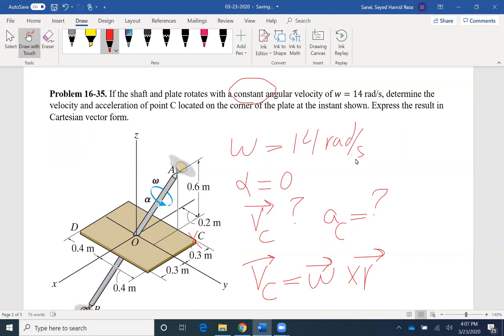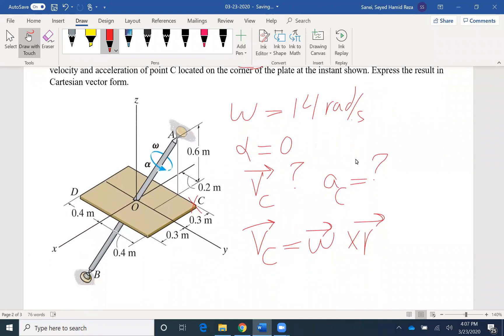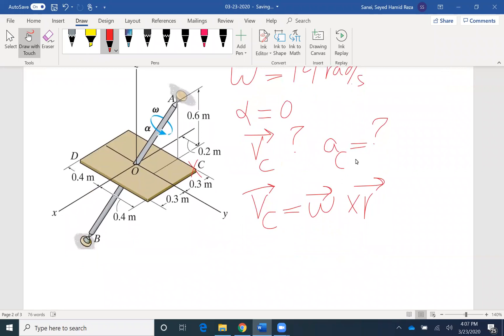And we know omega is rotating along the OA axis, so the axis of rotation would be OA. If we have the magnitude, we can find the vector form if you multiply the magnitude by the unit vector. And r is r from O to C, from the axis of rotation to C.